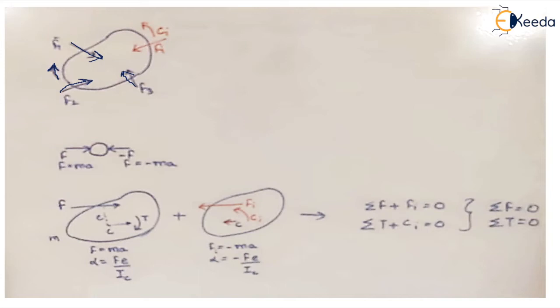If this rigid body also has a virtual hypothetical force — which we denote as the inertia force Fi — and a couple acting in the direction opposite to the externally applied couple, which we denote as Ci (the inertia couple), then we can say that this body is in static equilibrium.